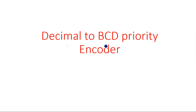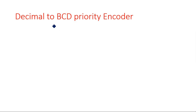In this video I am going to explain about a decimal to BCD priority encoder. In previous videos I have explained about a decimal to BCD encoder, where we did not concentrate on priority-based operation. In a BCD encoder, the maximum number is 9, so decimal varies from 0 to 9.